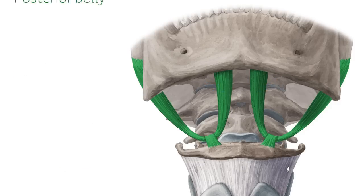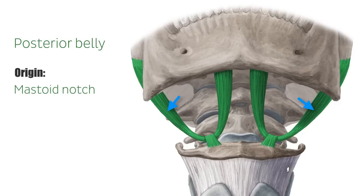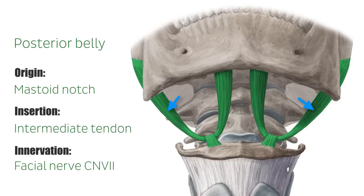The posterior belly of the digastric muscle is this part of the muscle seen here. The posterior belly is longer than the anterior belly and originates from the mastoid notch of the temporal bone on the medial side of the mastoid process. It has its insertion on the intermediate tendon together with the anterior belly. In contrast to the anterior belly, the posterior belly arises from the second pharyngeal arch, which is why its nerve supply comes from the facial nerve.